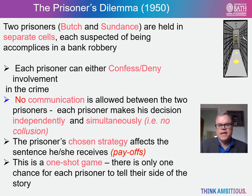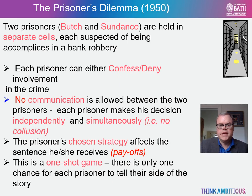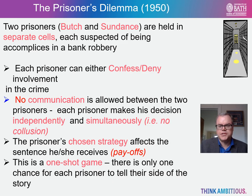The most famous game theory model is attributed to Melvin Drescher and Merrill Flood, who analyzed the interrogation records of prisoners of war in World War II. The simple model runs like this: there are two members of a criminal gang — we'll call them Butch and Sundance from the film. These are arrested and imprisoned. Each prisoner is in solitary confinement with no means of communicating with the other. The prosecutors lack sufficient evidence to convict the pair on the principal charge — a bank robbery — but do have enough to convict both on a lesser charge. The prosecutors offer each prisoner a bargain.